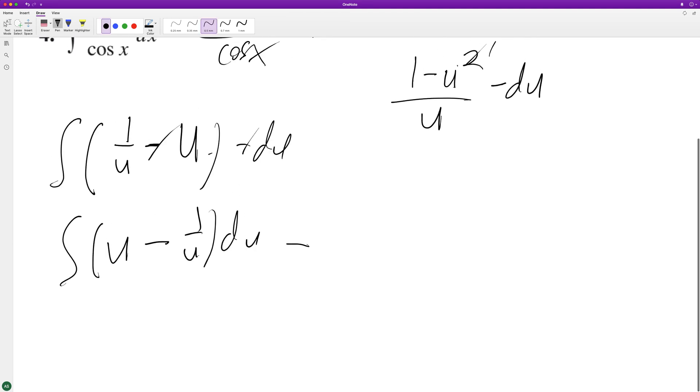So when we integrate this finally, we end up with u squared over 2. And then the integral of 1 over u, or u raised to negative 1, is the natural log of the absolute value of u plus c.